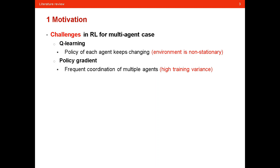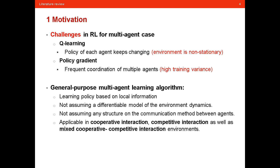There are significant challenges in reinforcement learning for the multi-agent case. For example, if you use Q-learning, the policy of each agent will keep changing, meaning the environment is non-stationary, so Q-learning will not converge. For policy gradient, frequent coordination of multiple agents may introduce high training variance, which makes it very hard for agents to train well.